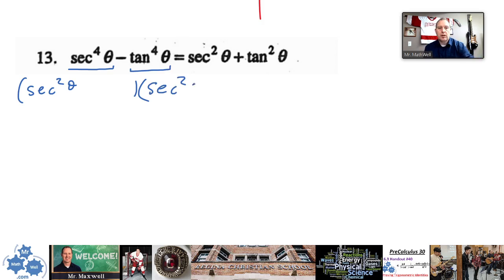So I'm going to put secant squared theta at the beginning of each of these factors. Remember, difference of squares. We have the square root of the first one as the first term separated by a plus and a minus, and then the second term is the square root of this one. So this is going to be tan squared theta, tan squared theta. So those are the factors for this right here.